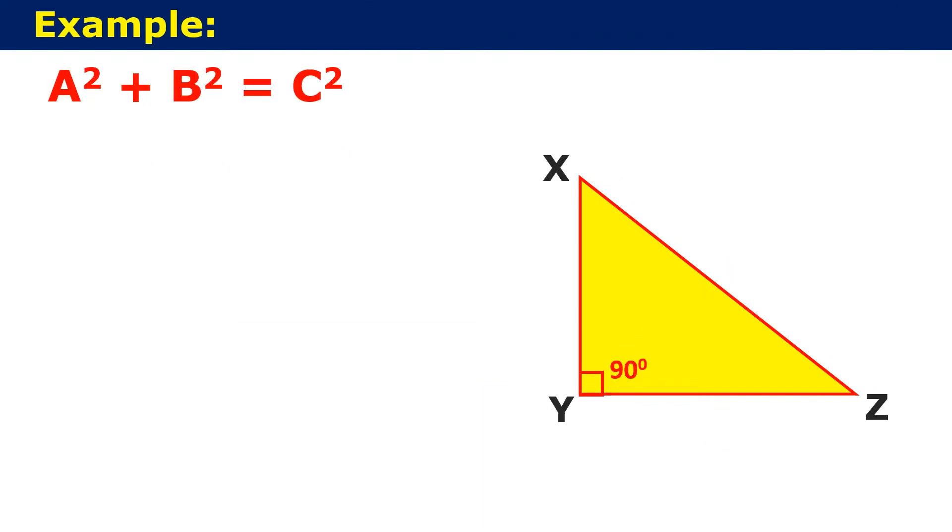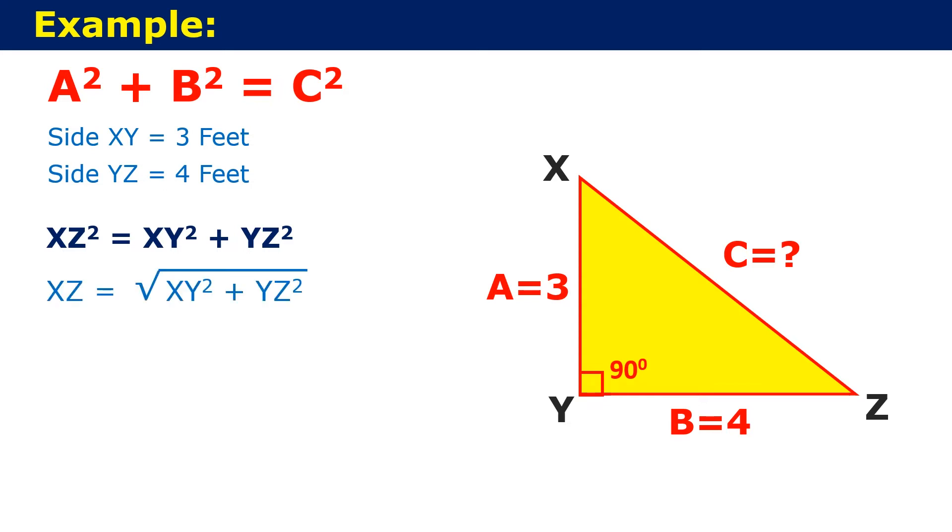Let us understand the above formula with the help of an example. Suppose, if the side XY is equal to 3 feet and side YZ is equal to 4 feet, then we can write side XZ square is equal to XY square plus YZ square. That is, XZ is equal to under root of XY square plus YZ square.